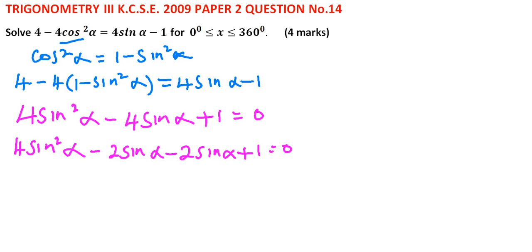you get this into brackets, 2 sin alpha minus 1, close the bracket, and we have 2 sin alpha minus 1 is equal to 0.